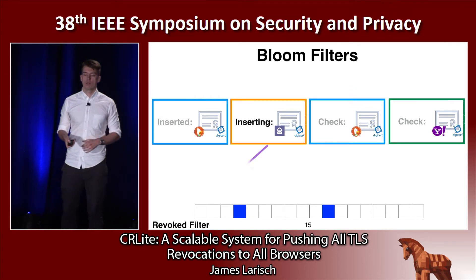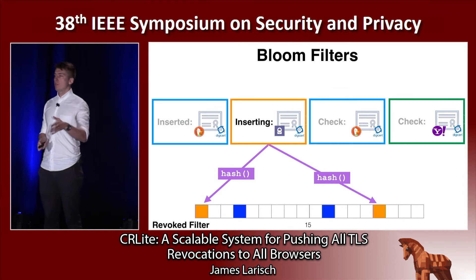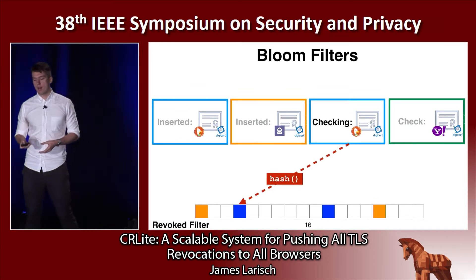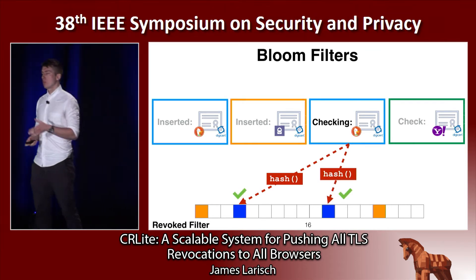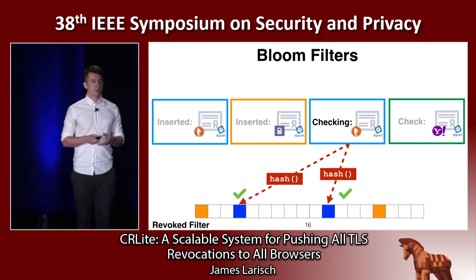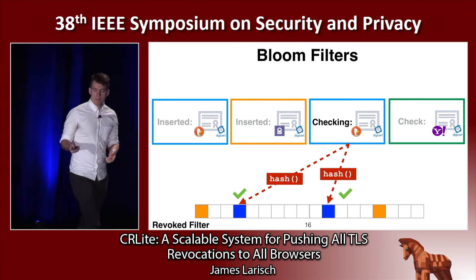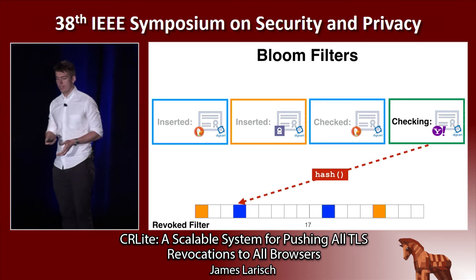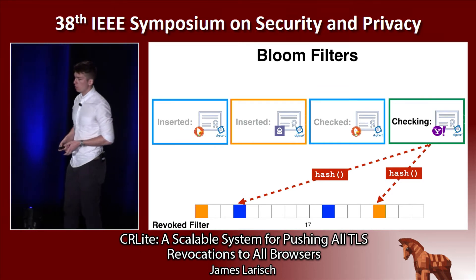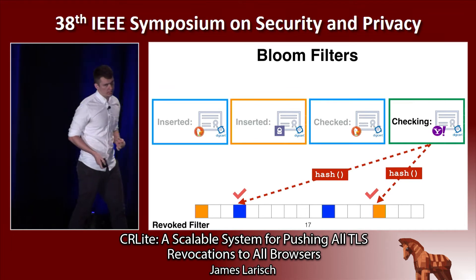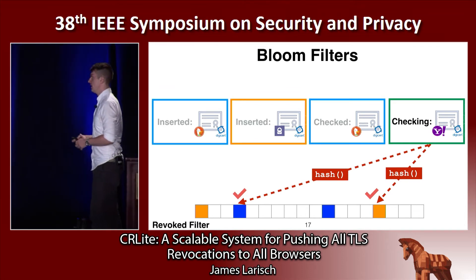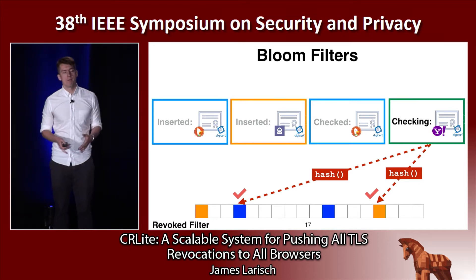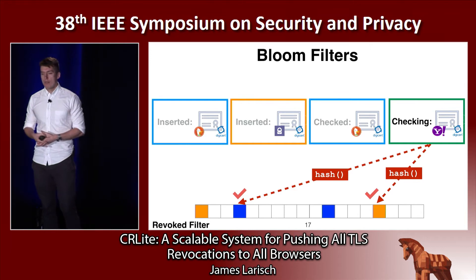ProtonMail's certificate is also revoked, so we flip two more bits from zero to one and ship this revocation filter to clients. The client encounters DuckDuckGo's certificate in the wild, checks if the bits resulting from hashing the certificate are one — which they are — so the bloom filter says yes, DuckDuckGo is revoked, and the browser blocks access. But if the browser encounters Yahoo's certificate, which is not revoked, the bit array indices from hashing Yahoo's certificate may collide with bits already flipped. So the bloom filter incorrectly reports Yahoo's certificate as inserted, and the browser blocks access to a non-revoked certificate. This false positive problem is unacceptable for revocation, because the browser might block access to a legitimate site — maybe your bank — when the certificate has done nothing wrong.